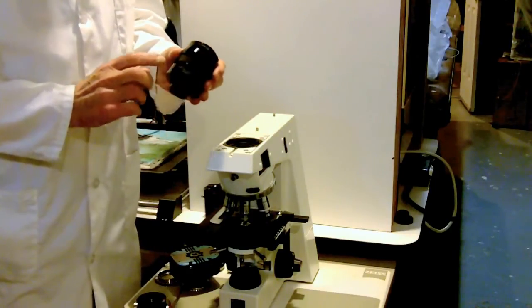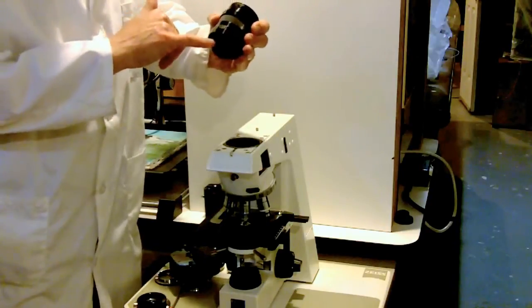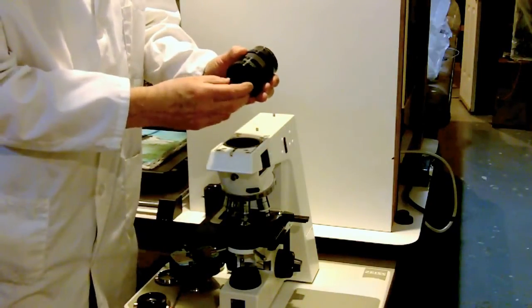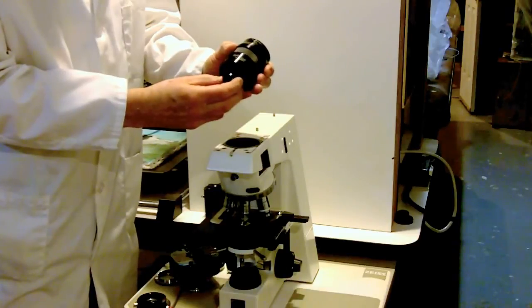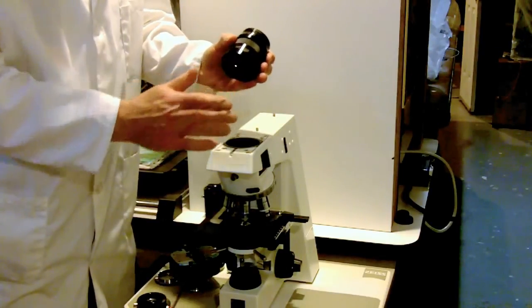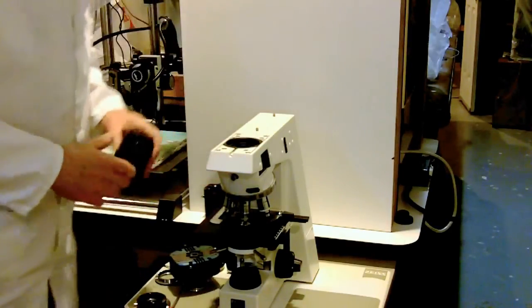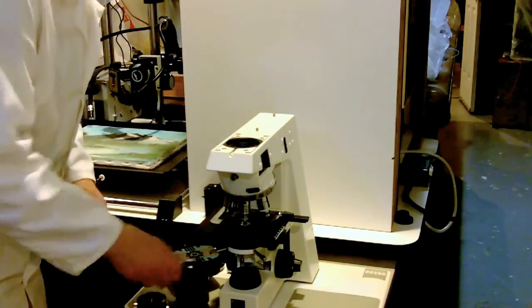Now the InFocus module has a special optical component here that attaches to the bottom. This is called the Z-type component. It's an optical lens set up just for the Zeiss ICS objectives.